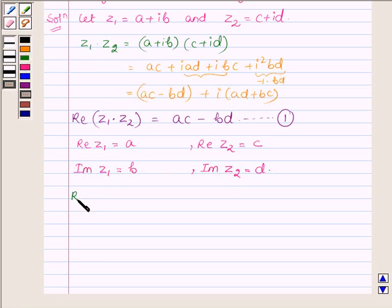Now let us find the value of the real part of Z1 times the real part of Z2, minus the imaginary part of Z1 times the imaginary part of Z2. The real part of Z1 is A, the real part of Z2 is C, the imaginary part of Z1 is B, and the imaginary part of Z2 is D.